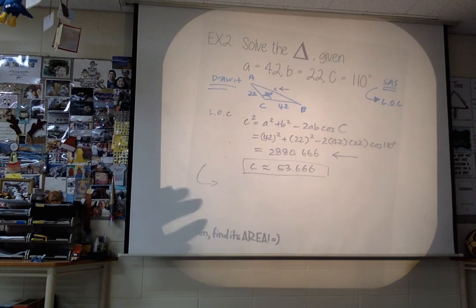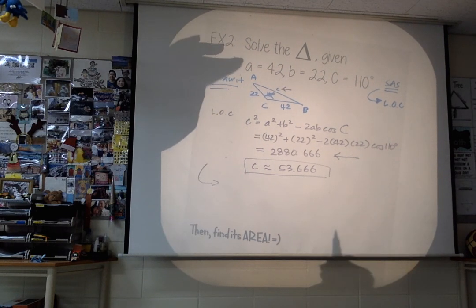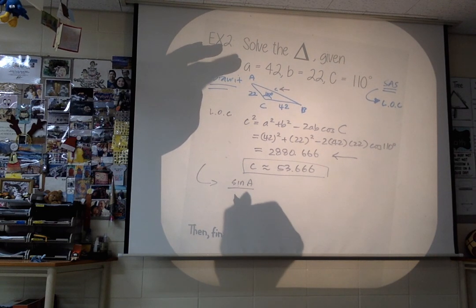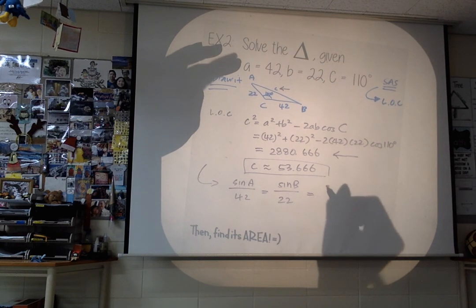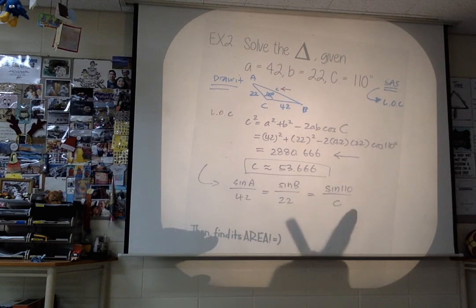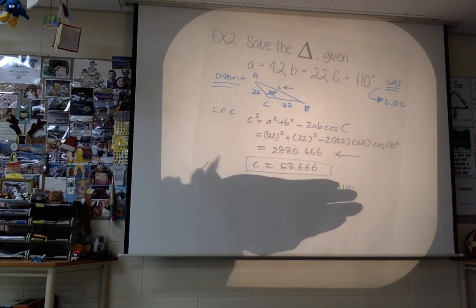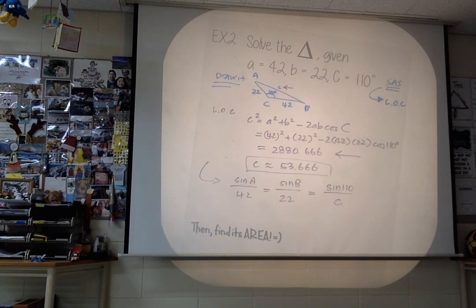I want to show you guys that Law of Sines does not work here. Let's say someone tried to use Law of Sines: sine A over 42 equals sine B over 22 equals sine C over the unknown C. There's just no way to cross multiply — we don't have enough information. That's when you know you have to use Law of Cosines. I'm trying to prove to you that Law of Sines does not work in this case given this information. But after you've found side C, now you can use Law of Sines.